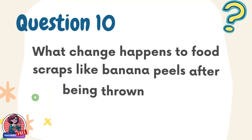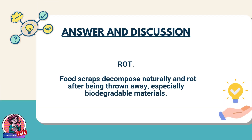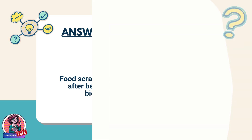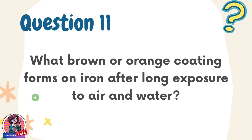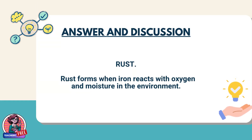Question 10. What change happens to food scraps like banana peels after being thrown away? Answer: Rot. Food scraps decompose naturally and rot after being thrown away, especially biodegradable materials. Question 11. What brown or orange coating forms on iron after long exposure to air and water? Answer: Rust. Rust forms when iron reacts with oxygen and moisture in the environment.